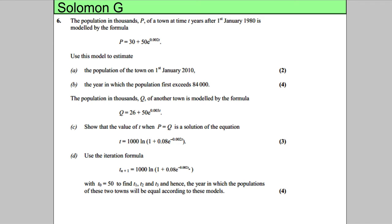This question says the population in thousands, so make sure you read the question. P, of a town at time T years after the 1st of January 1980 is modeled by this formula. P, the population in thousands, is equal to 30 add 50 e to the power of 0.002T, where T is the number of years after the 1st of January 1980. Use this model to estimate the population of the town on the 1st of January 2010.